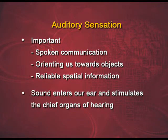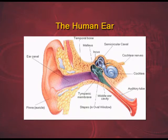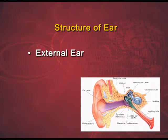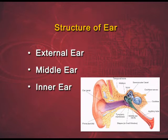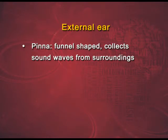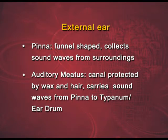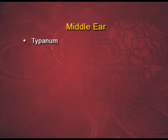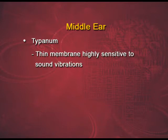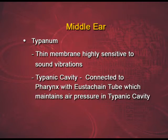What you can see on your screens is a structure of the human ear. The human ear is divided into external, middle, and inner ear. The external ear constitutes of a pinna, which is a funnel-shaped structure that collects sound waves from the surroundings. It also has the auditory meatus, which is a canal protected by wax and hair, carrying sound waves from the pinna to the tympanum or the eardrum. The tympanum is located in the middle ear — a thin membrane which is highly sensitive to sound vibrations.